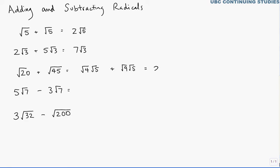The √4√5 becomes 2√5. The √9√5 becomes 3√5. And so we have 2 of an object plus 3 of the same object, therefore we have 5 of those objects, 5√5.